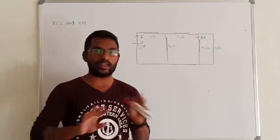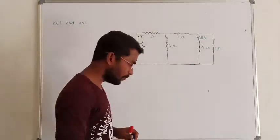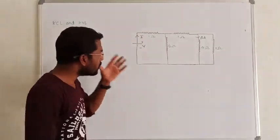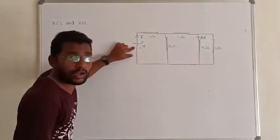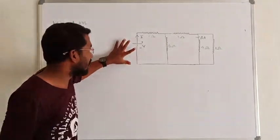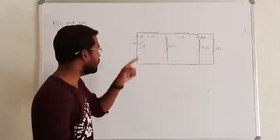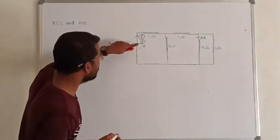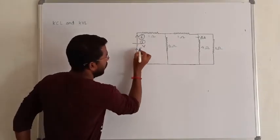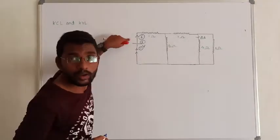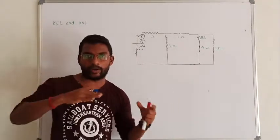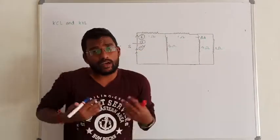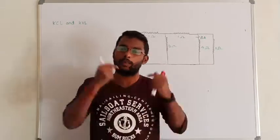Almost 90% of questions rely on these concepts. Let me show you this question. What is the question? We need to find the voltage value and the current value. This is a source element and this is a load element. The current is leaving the plus terminal — that is the source. For a passive element like general resistance, the current entering point is plus.